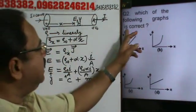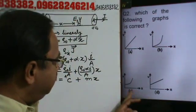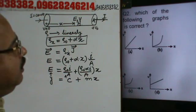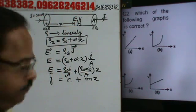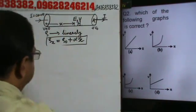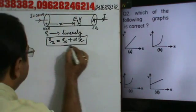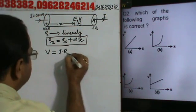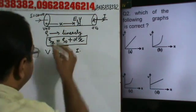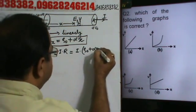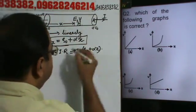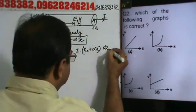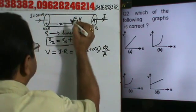Now the second problem: which graph is correct for V versus x? We have already derived the expression for E. Now for V: the potential V at distance x is equal to i into R, where R for a small element dx is rho(x)·dx/A, and rho(x) = rho_naught + alpha·x.